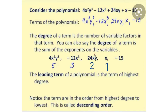Let us see another example: 4x²y³ − 12x³ + 24xy + x − 15. This polynomial has five terms. The sum of exponents in the first term 4x²y³ is 5; in the second term it is 3; in the third term it is 2; in the fourth term it is 1; and the fifth term is a constant. The highest sum of exponents is 5, so the degree of this polynomial is 5.